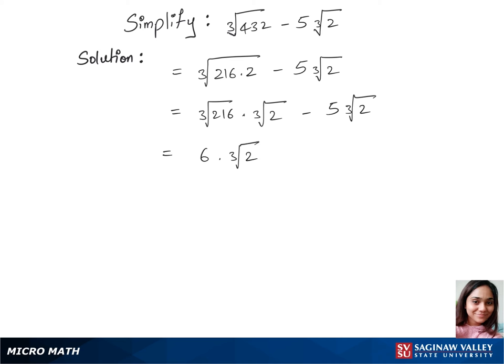We see that they both have cubic root of 2, so we can factor that out and write this as 6 minus 5 whole times cubic root of 2. So 6 minus 5 is 1 times cubic root of 2.